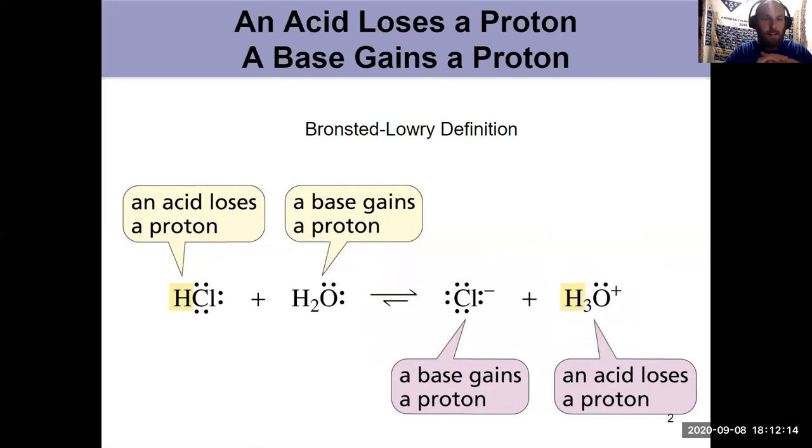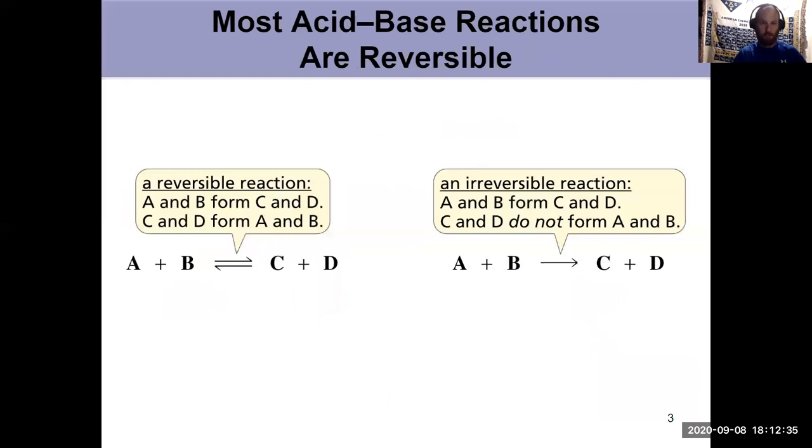An acid can't lose a proton unless there's something to accept it. It's not just going to ditch it into space. Even if we're thinking about just putting an acid in water and the acid losing the proton that way, water, the solvent, is accepting the proton. It's got to go somewhere. Key idea: tracking where those protons are going.